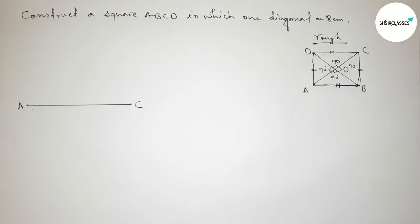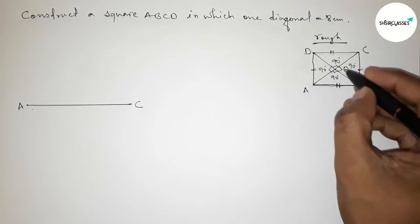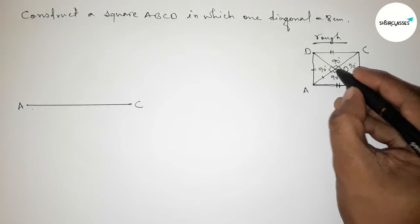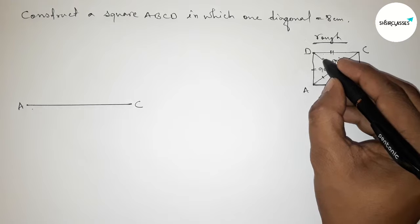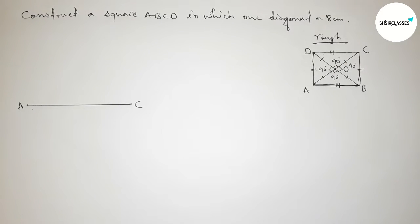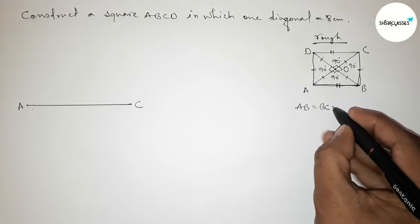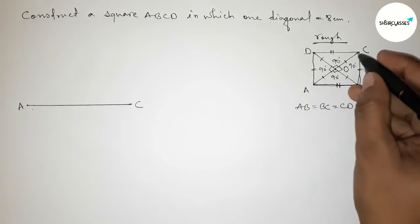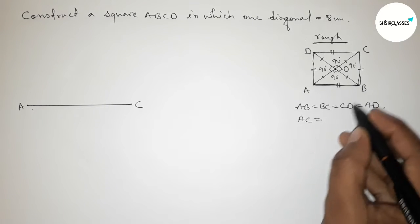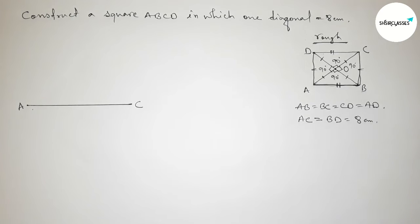All the sides of a square are equal. Also, the two diagonals AC and BD bisect equally. So the length OA equals OC, and the length OB equals OD — all the lengths are equal. The two diagonals AC equals BD equals 8 centimeters.